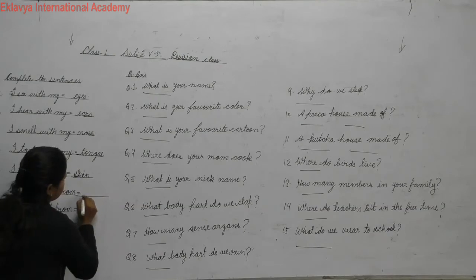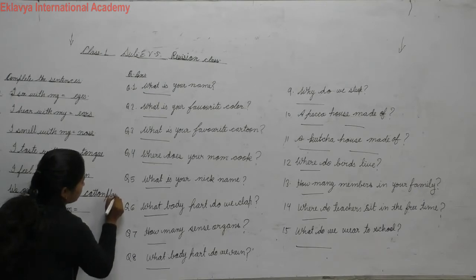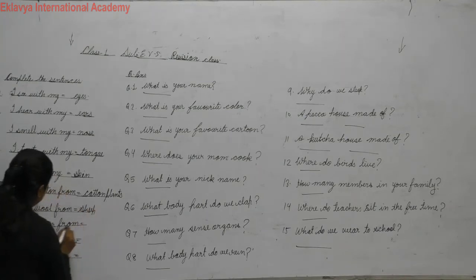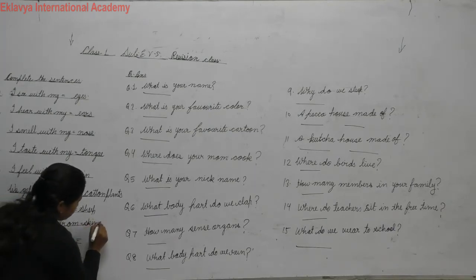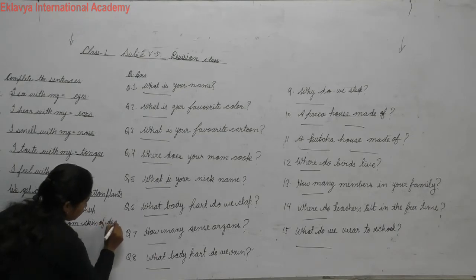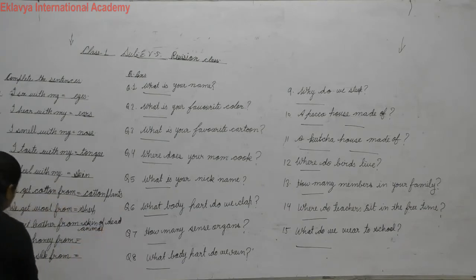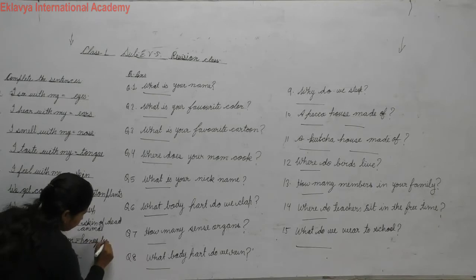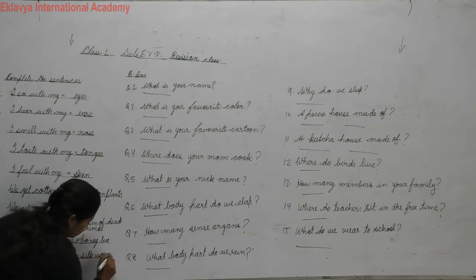We get cotton from cotton plants and we get wool from sheep. We get leather from skin of dead animals. We get honey from honey bee. And we get silk from silk worm.